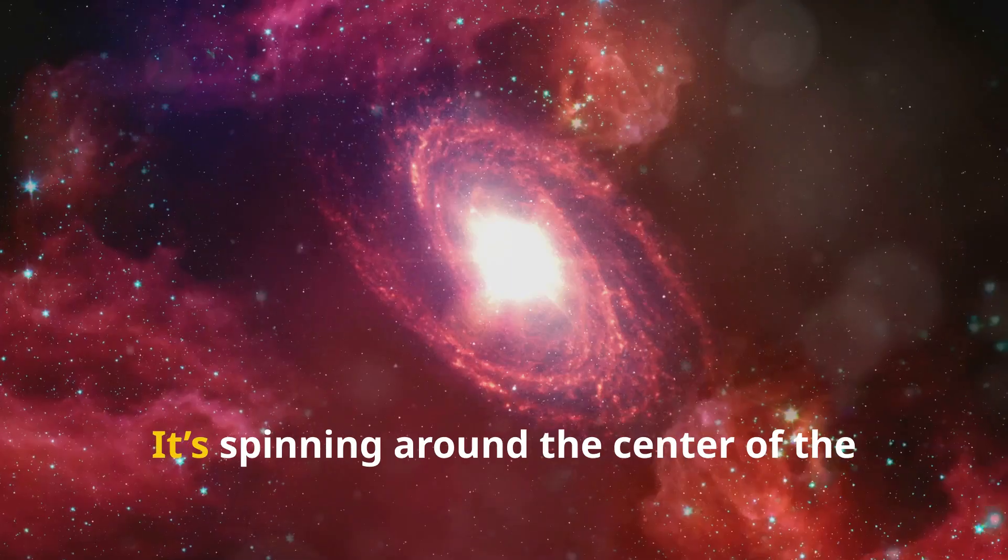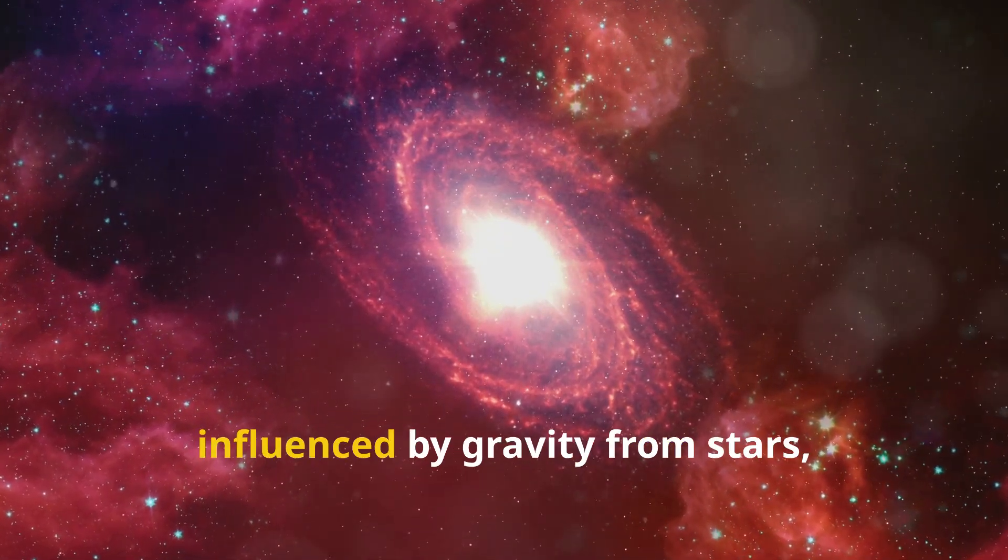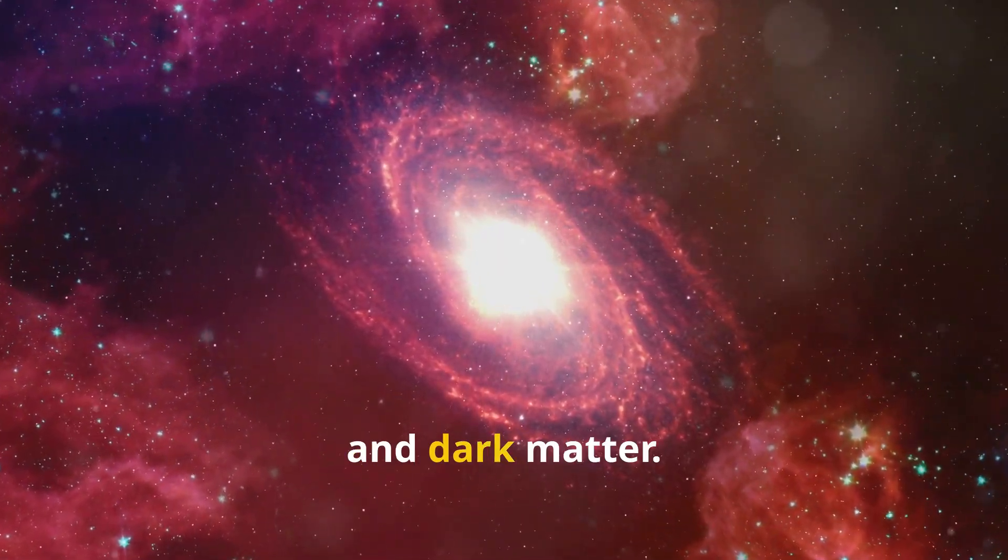The sun isn't moving in a straight line. It's spinning around the center of the Milky Way, weaving through the spiral arms, influenced by gravity from stars, black holes, and dark matter.